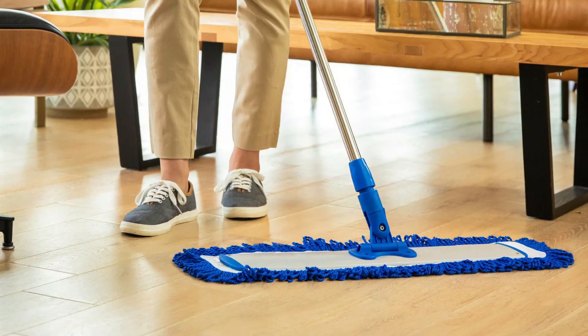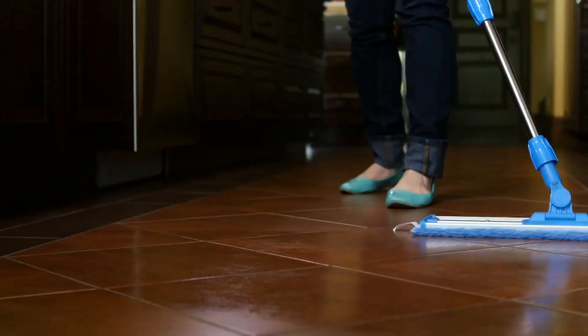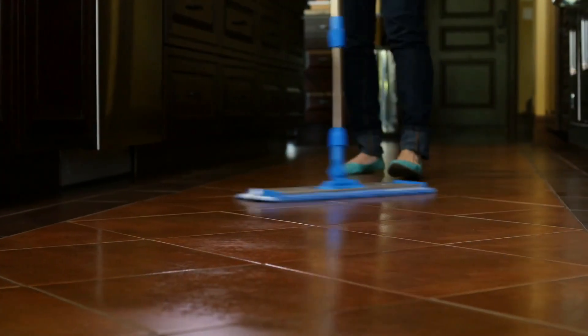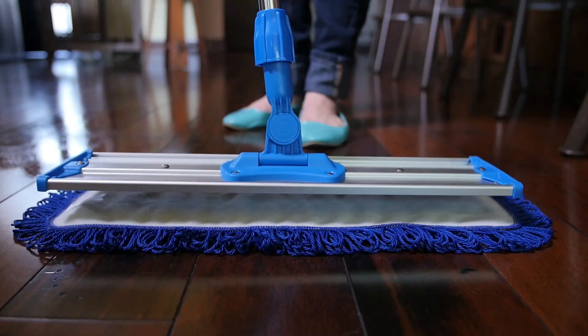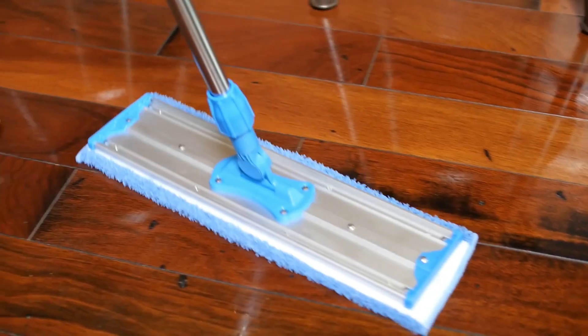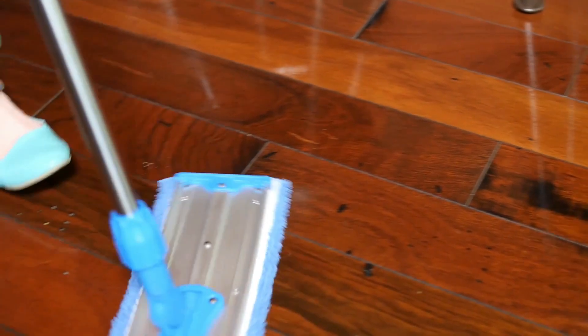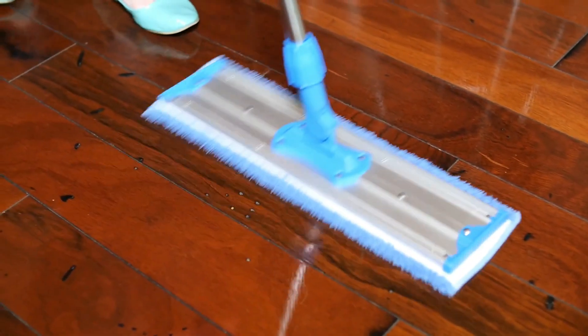The durable stainless steel handle and 360-degree swivel head help this mop power through large cleaning jobs. The handle is adjustable from 42 to 70 inches to suit all user heights. After mopping, the reusable microfiber pads can be machine washed for a good deep clean.